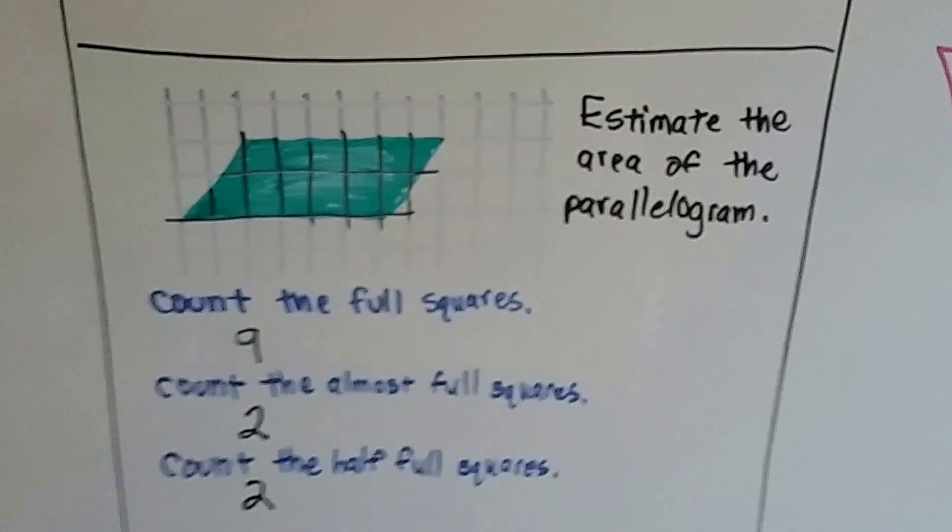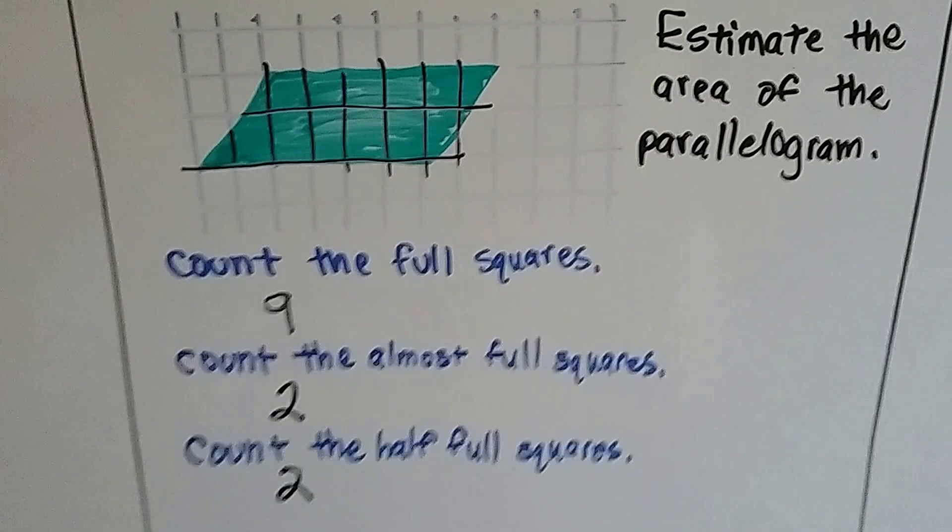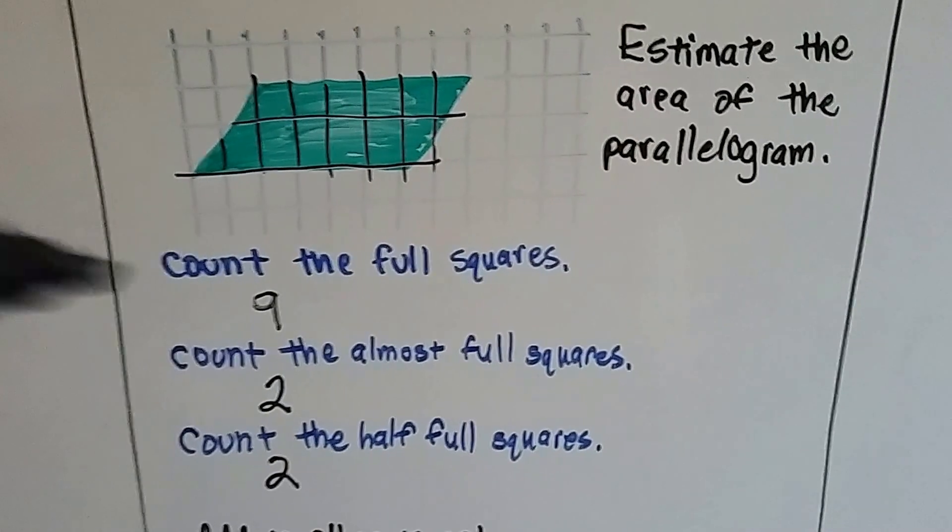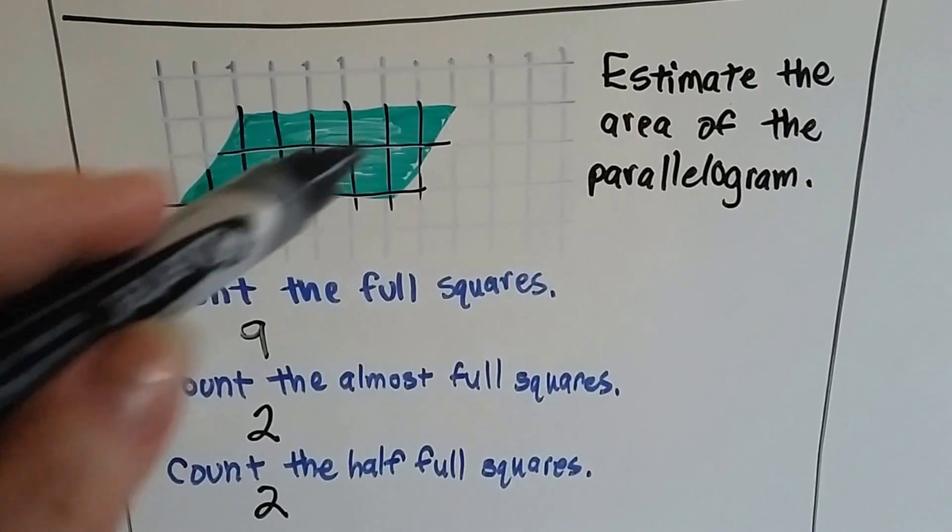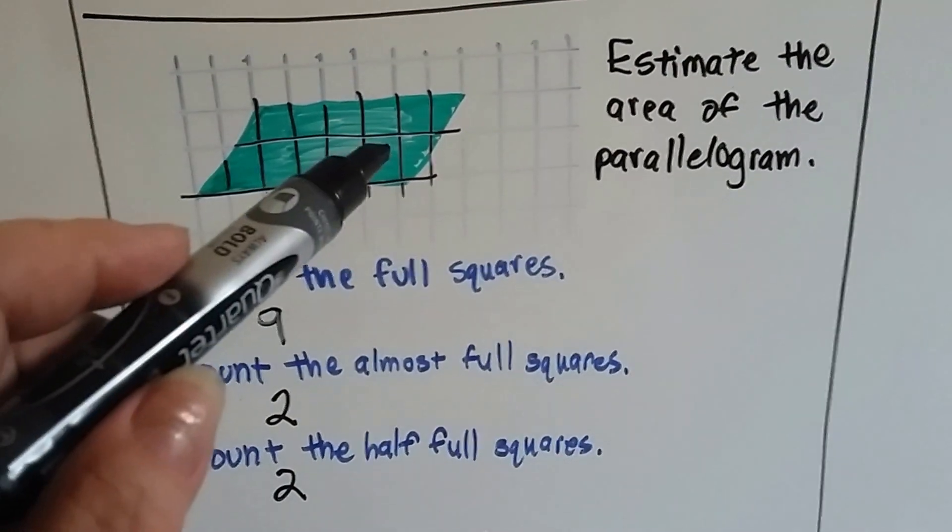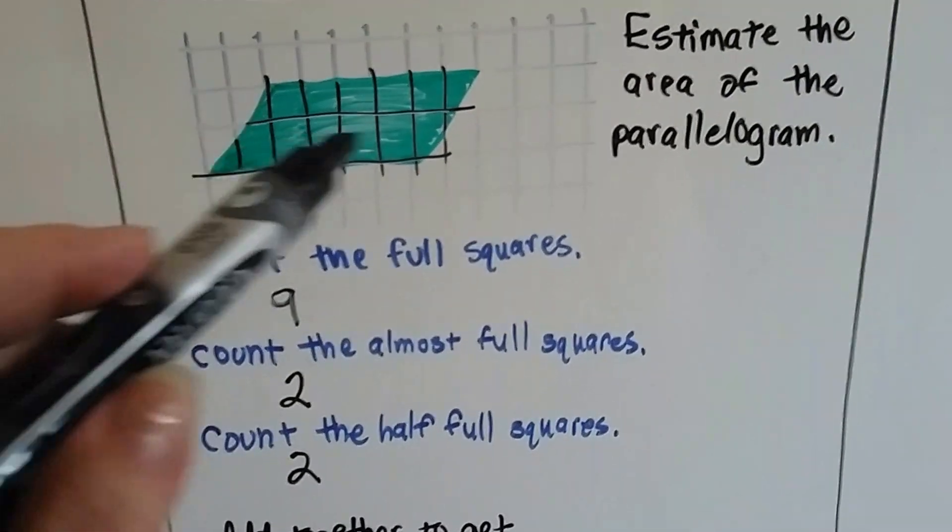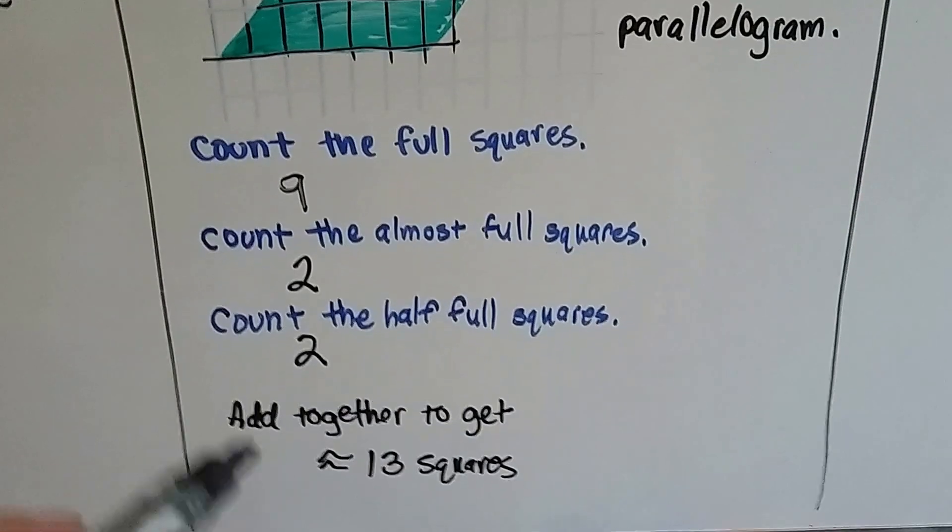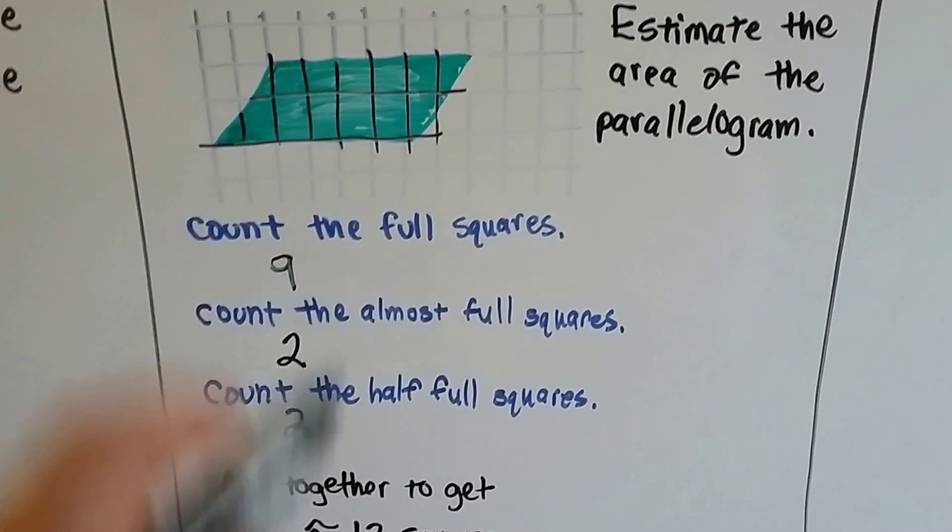If it says to estimate the area of a parallelogram, you count the full squares, because we're just estimating. And we get nine full squares. We count the almost full squares - one, two. We count the half full squares - one, two. We add them together and get approximately 13 squares is what this parallelogram is filling.